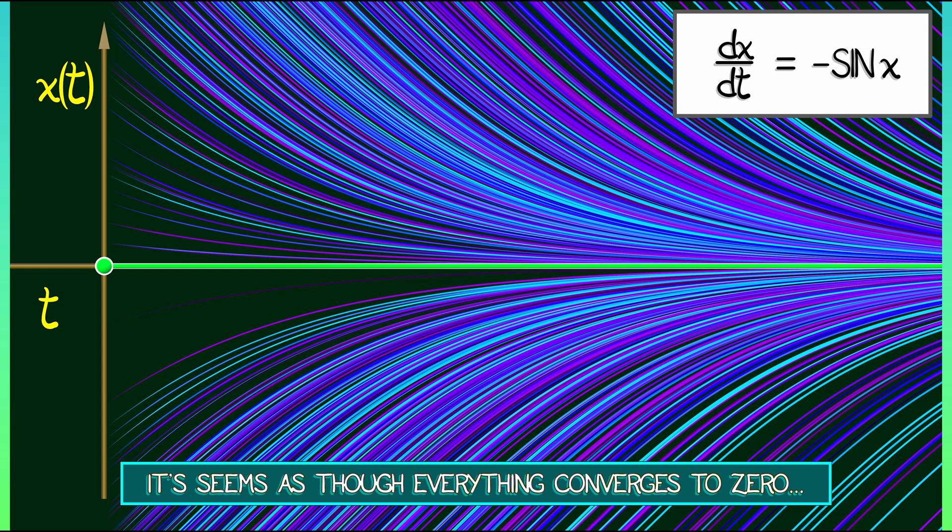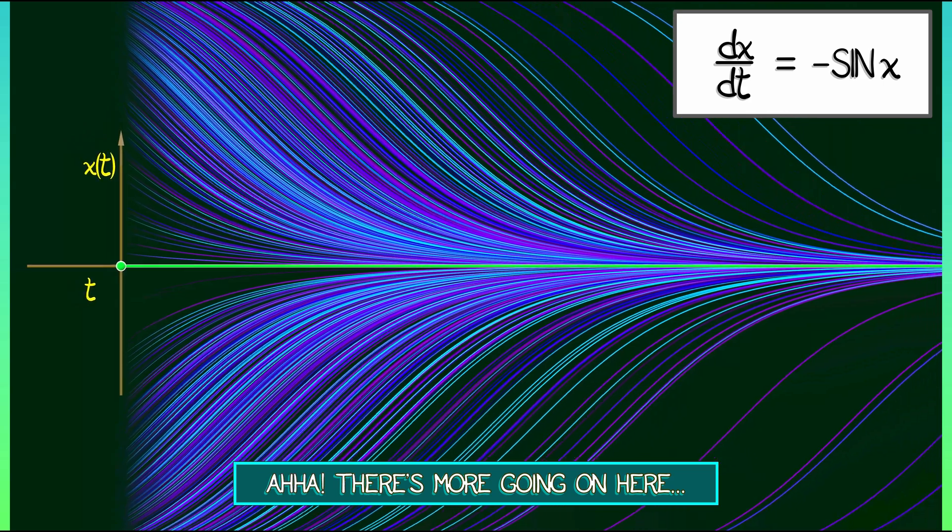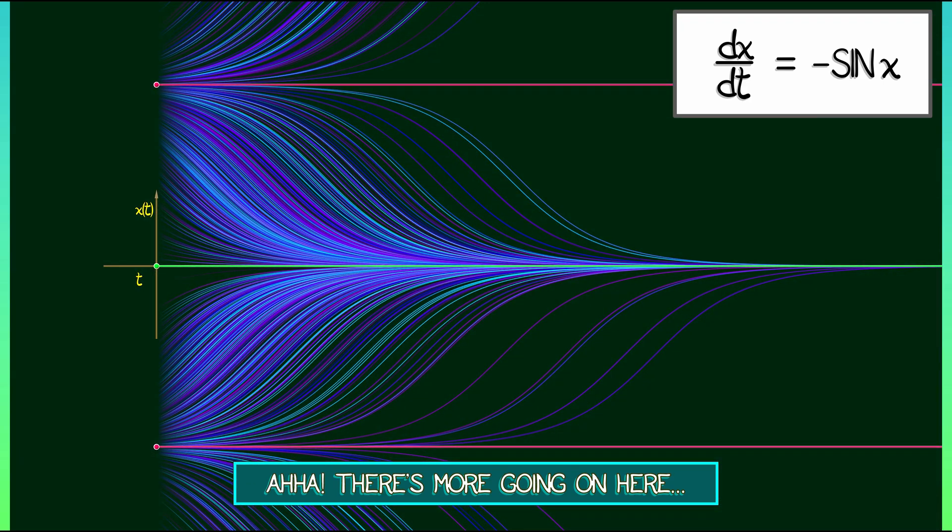But wait a minute. There's more going on here than just this, right? We're looking at a local picture of what happens near zero. If we zoom out a bit, then we start seeing why this differential equation is so difficult to solve in general. Why it's so interesting, that's because there's more than one place where sine of x is equal to zero. There are lots of places where sine of x equals zero. And if we start there, we stay there because the derivative vanishes.